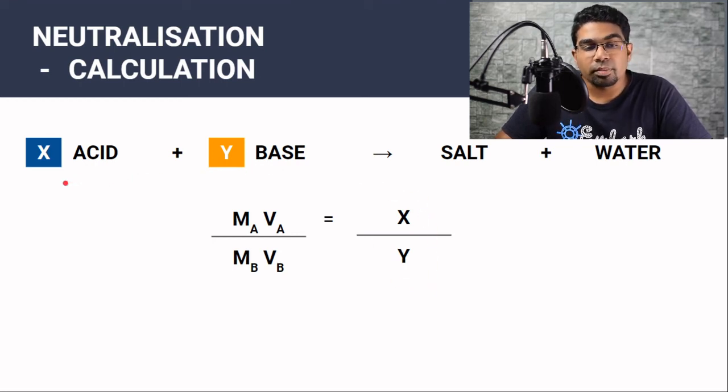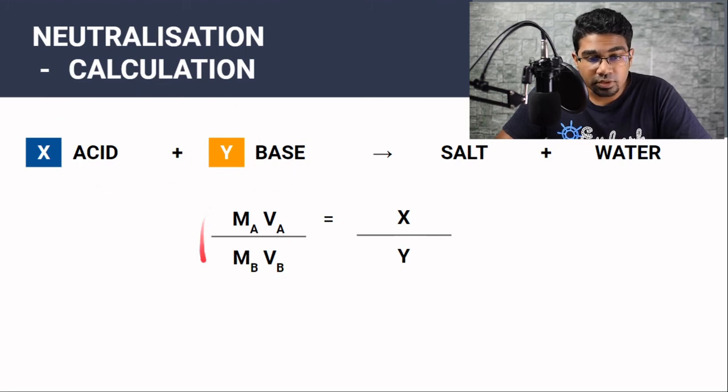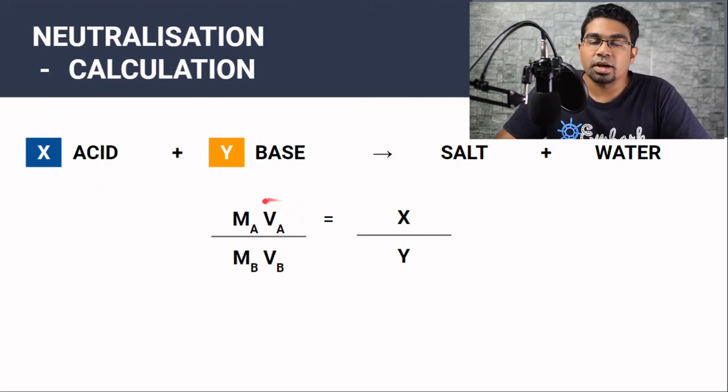We always start out by writing a balance equation of the neutralization reaction. Once we have identified the mole ratio, then all we need to do is substitute all the values into the equation. And we can find the unknown.